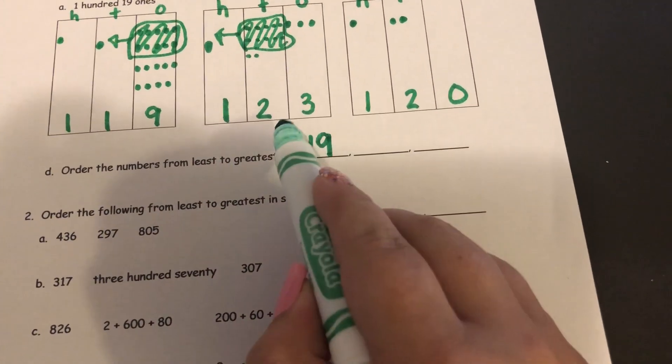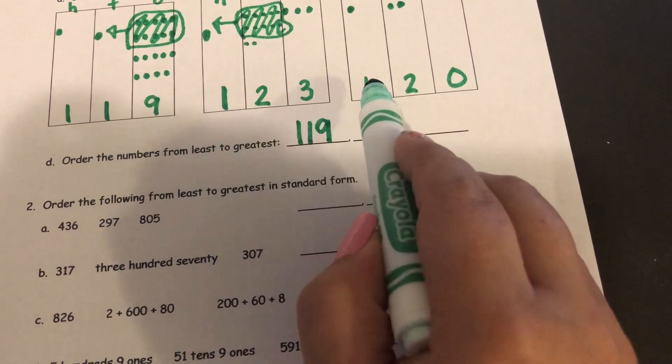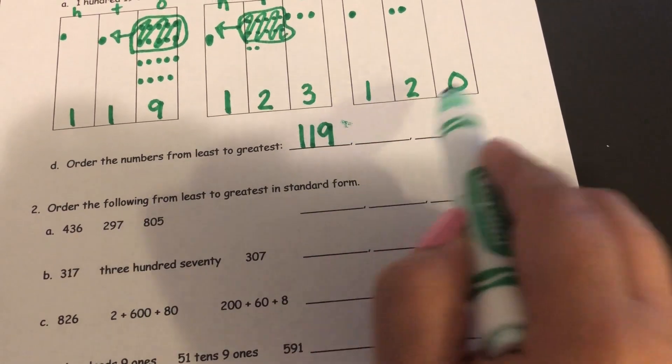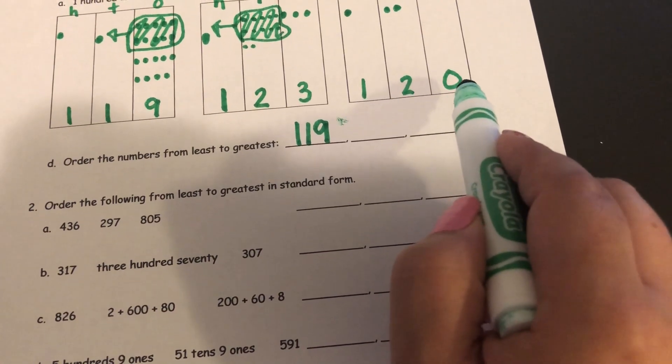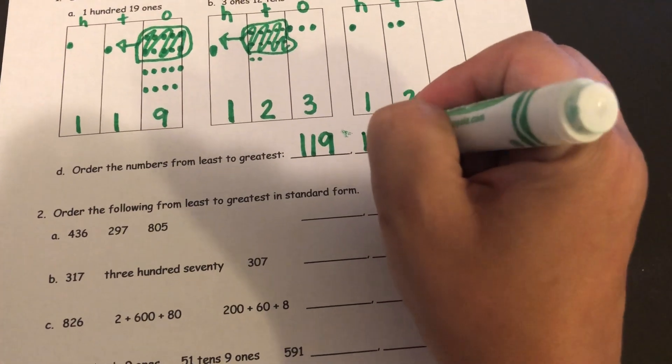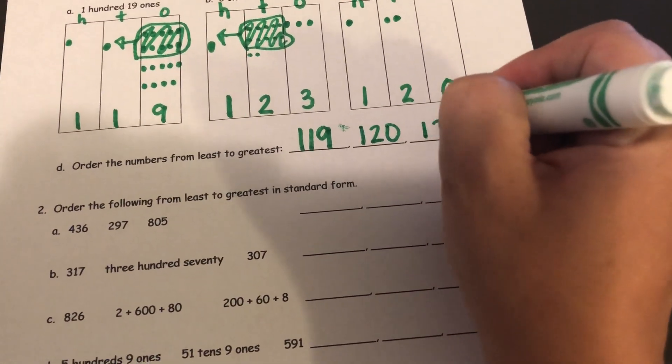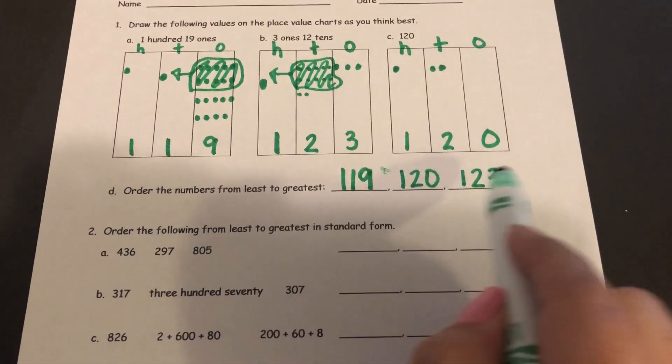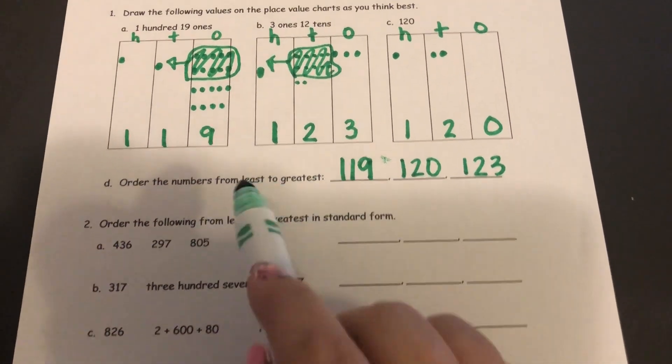Now I am comparing the next two. They both have 100 and they both have 2 tens, so I need to look at the ones place. This has 0 ones, which is going to be less than 3 ones. Alright, so that's how this one works. You draw them first and then put them in the order from least to greatest.